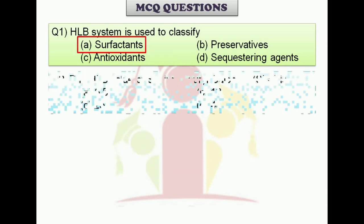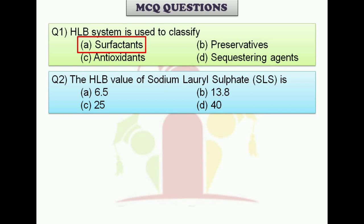Question 2: The HLB value of sodium lauryl sulfate, SLS, is — option A: 6.5, option B: 13.8, option C: 25, option D: 40. Pause the video and try to answer. The correct answer is option D: 40.